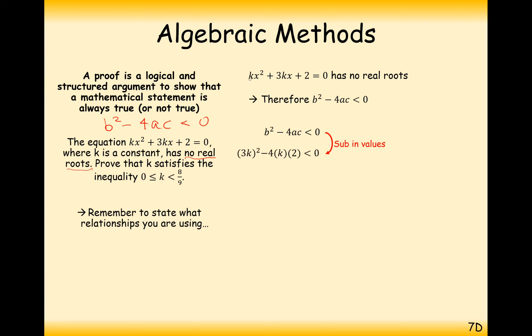And what we need to prove is that K is in between 0 to 8 over 9. So taking this polynomial here, and if it has no real roots, then we've got B squared minus 4ac is less than 0. Now substituting in your terms here, A is going to be this term here, B is going to be everything that's in front of X, and C is going to be the 2 at the end there.